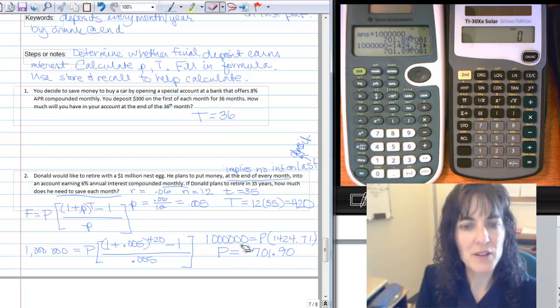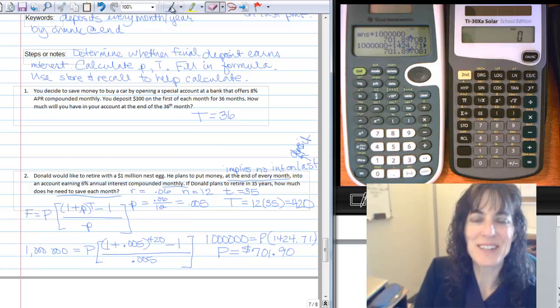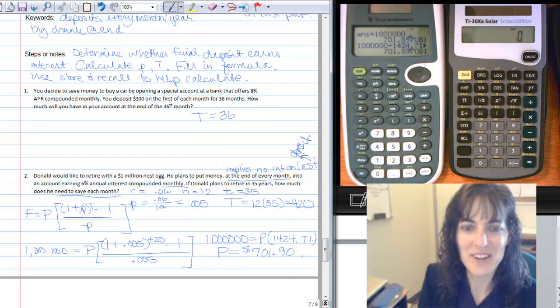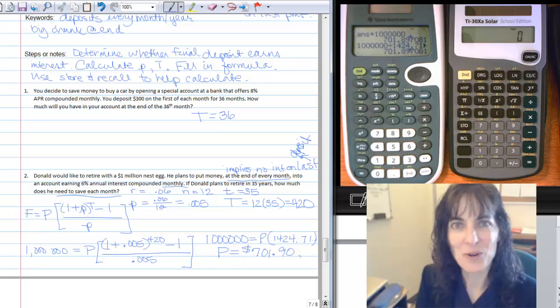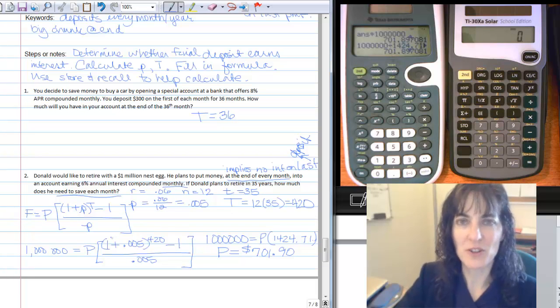So we get the same answer a number of different ways on a number of different calculators, and now you know the order of operations to do solving for a particular final value that you're after.